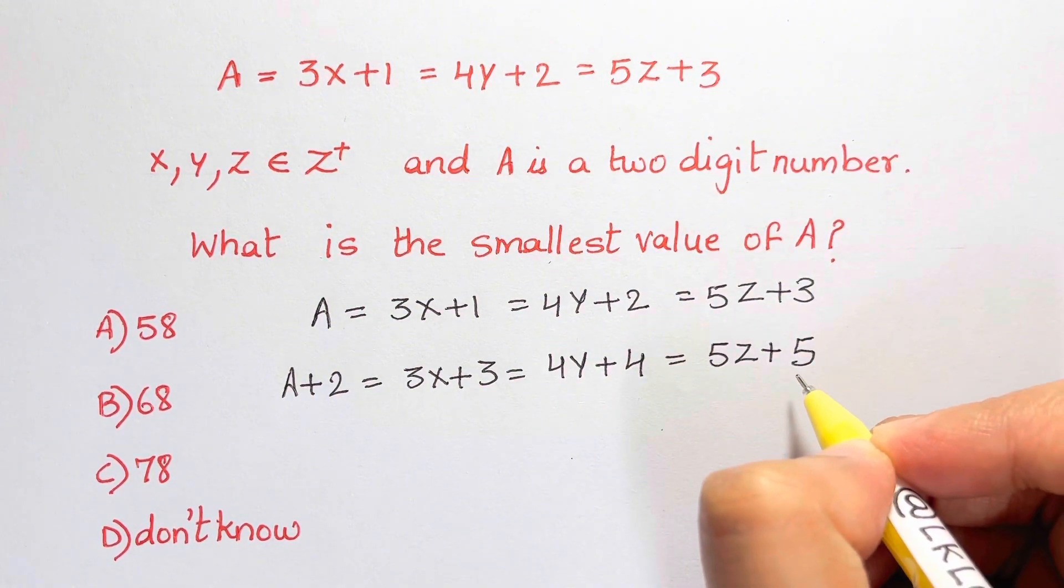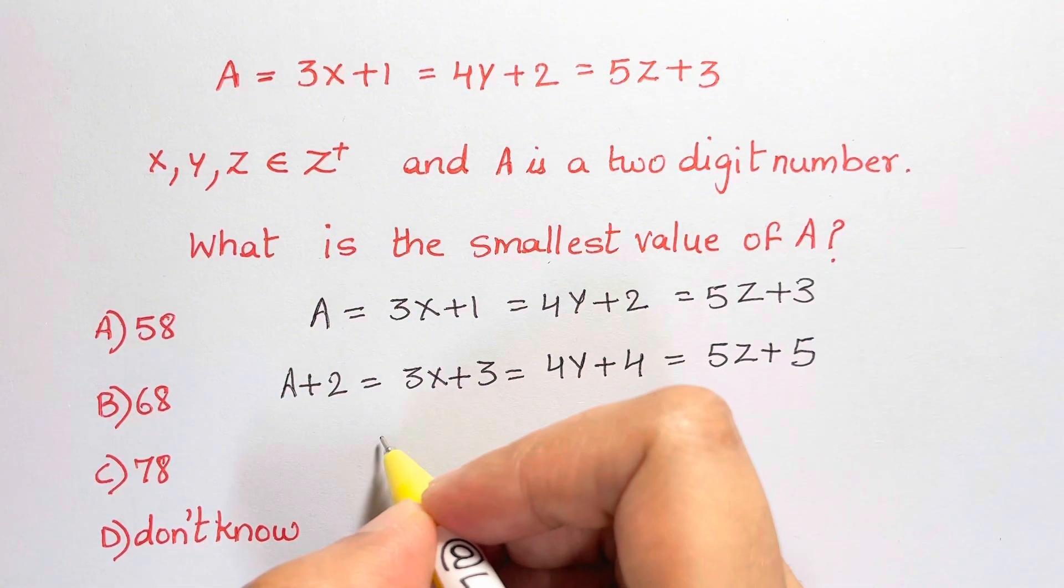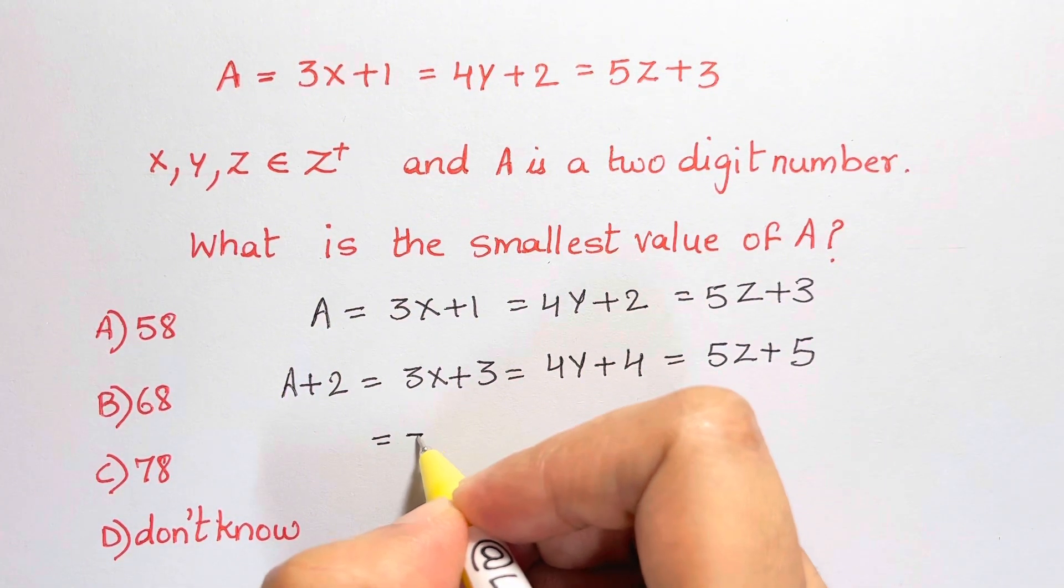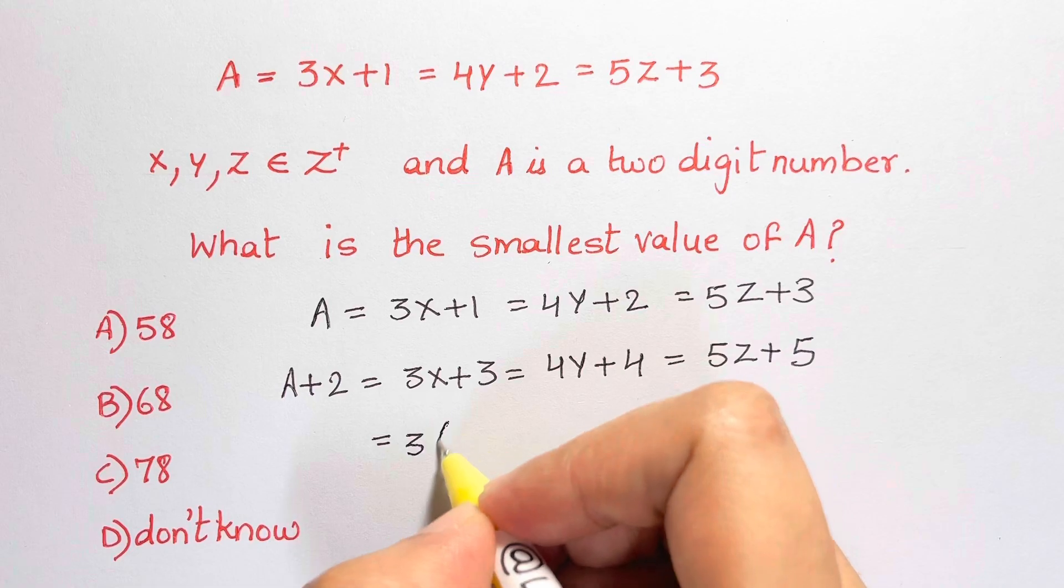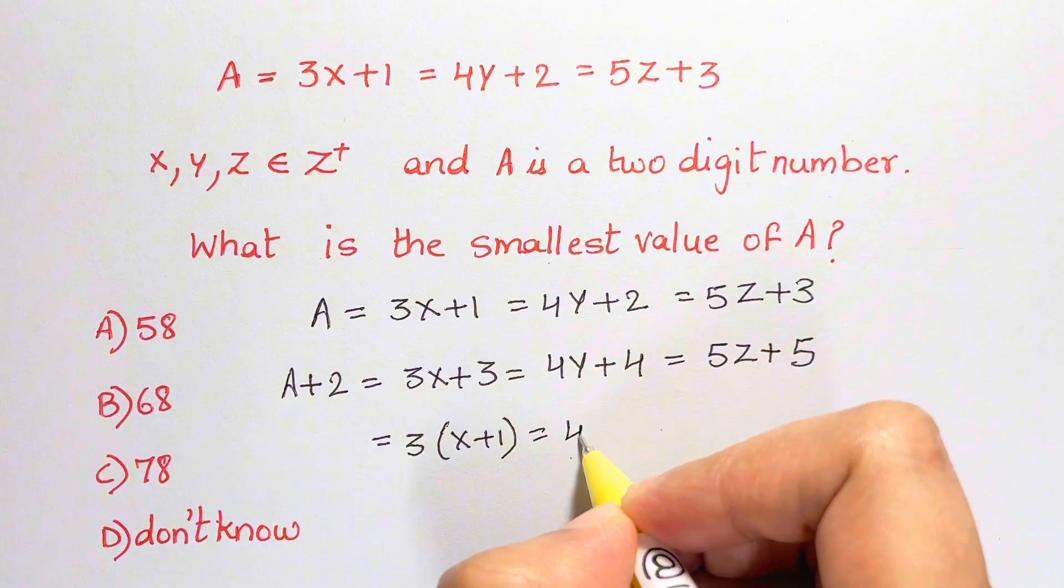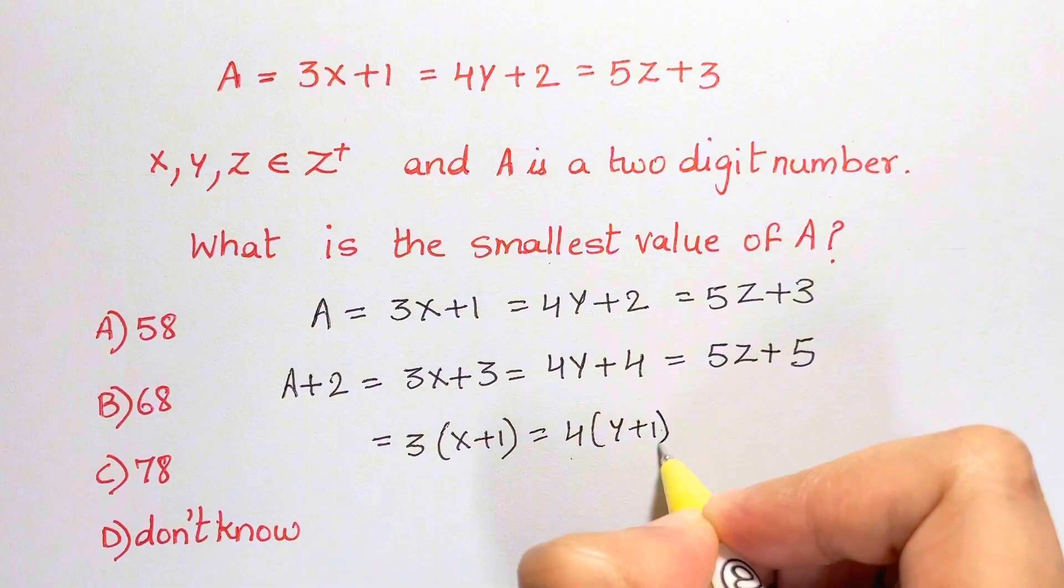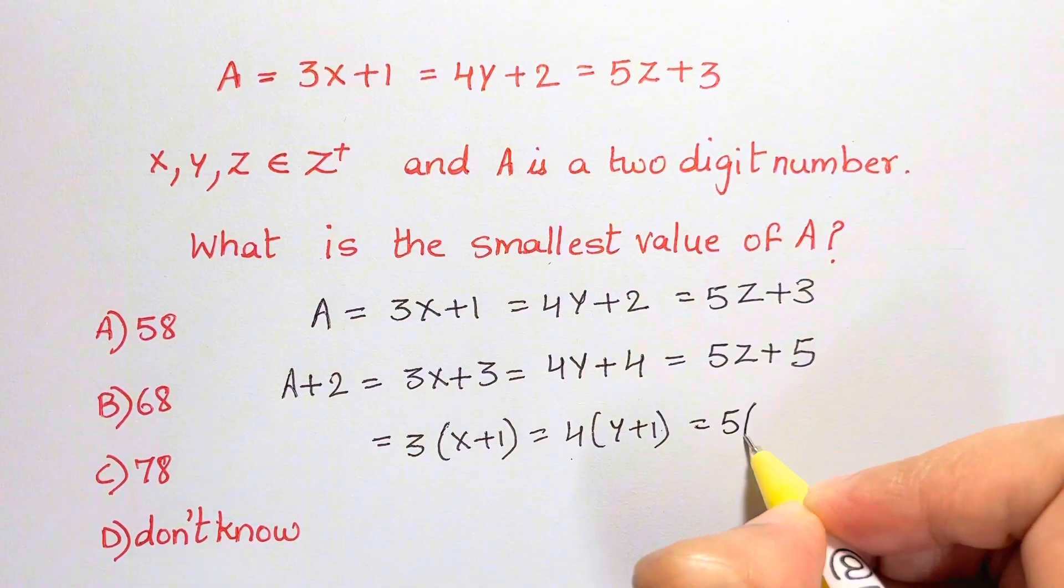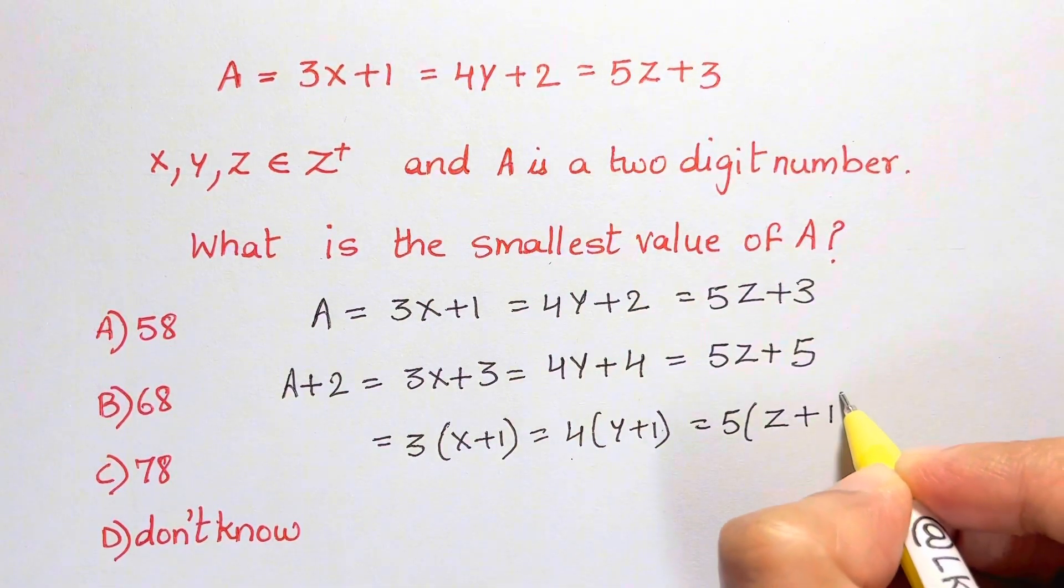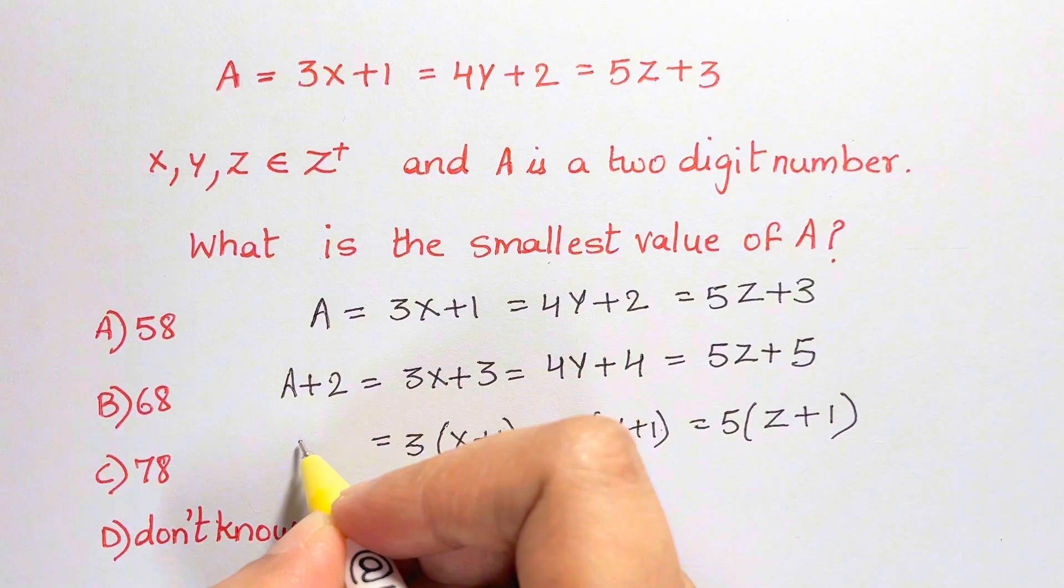Now what can I do? I can take the common factors out. So 3 common, what am I left with? x plus 1. Here 4 common, y plus 1. Here 5 common, so left with z plus 1. That's your A plus 2.